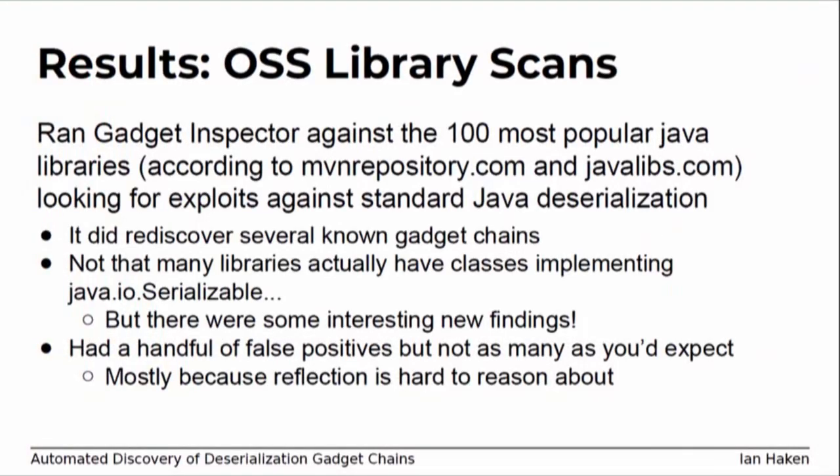So does it live up to the hype? The first thing I did after writing this on a 10-hour flight to Europe was run it on some open source libraries to see if it does anything useful. At the very least it should find gadget chains we know exist from Frohoff and Lawrence's 2015 discoveries. I ran it against the 100 most popular libraries according to mavenrepository.com and looked for exploits against the standard Java deserialization library. It did successfully rediscover some known gadget chains, didn't find a ton of new classes implementing Serializable, but did have some new findings — and only a handful of false positives, mostly because reflection is hard to reason about.